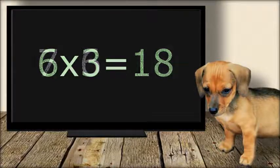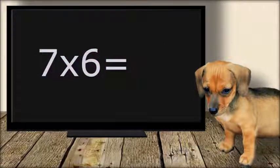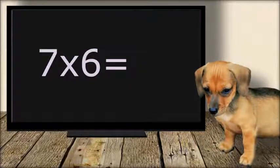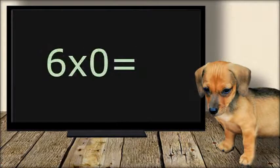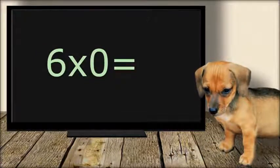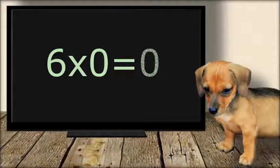7 times 6 equals... 42. 6 times 0 equals... 0.